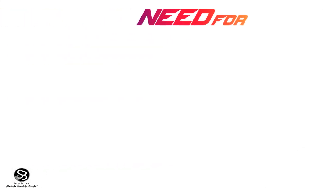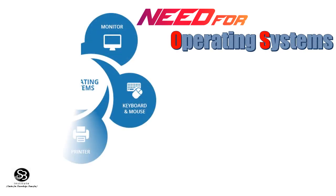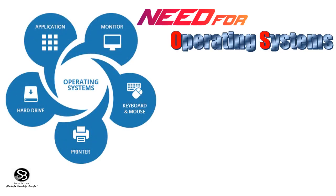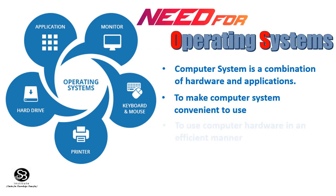What is the need for operating systems? A computer system is a combination of hardware and applications. It is used to make the computer system convenient to use, to use computer hardware in an efficient manner, and it decides how to do, what to do, and when to do.